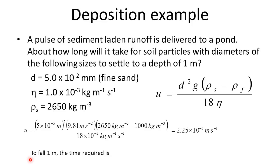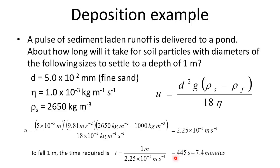Now we want to estimate how much time is required for the particles to fall one meter. We assume the particles reach their terminal velocity instantaneously, which is usually an acceptable approximation. The settling time t is just the depth of one meter divided by the settling velocity. That gives us 445 seconds, or 7.4 minutes, for fine sand particles to settle to a depth of one meter.